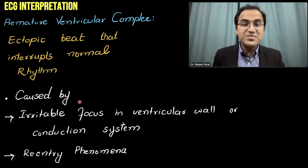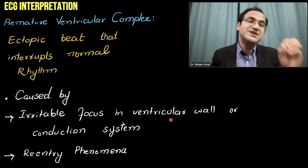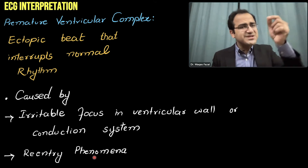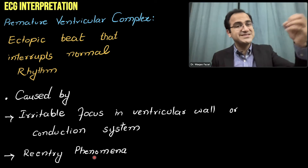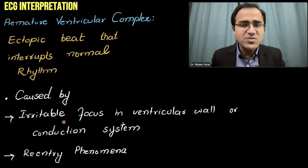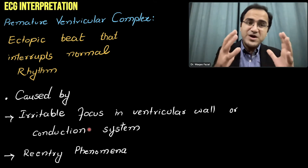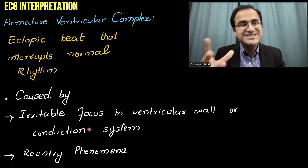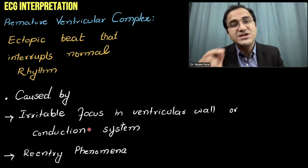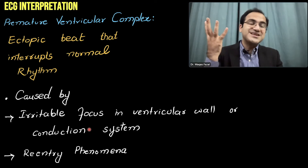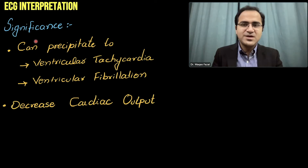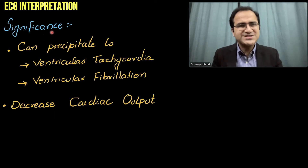PVCs are caused by an irritable focus in the ventricular tissue or conduction system, or due to re-entry phenomena where the current re-enters an ectopic focus and re-initiates another beat. These are caused whenever myocardial tissue is damaged — whenever there is myocardial ischemia or a previous history of MI. Those dead or damaged myocardial cells have the potential to produce these abnormal electrical rhythms.